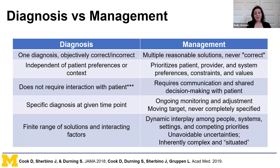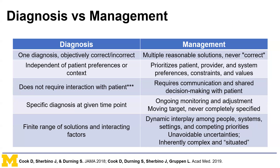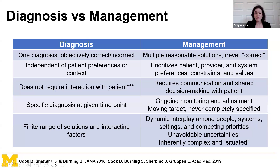Through longitudinal relationships—whether over a week of hospitalization or long-term in clinic when we work with people living with HIV—management requires ongoing monitoring and adjustment. It's a moving target, never completely specified. In sum, it's a dynamic interplay among people, systems, settings, and competing priorities, and those are unavoidable. Management is thought to be inherently complex and situated, which is why it's harder to discuss in case conferences and harder to test around as well.